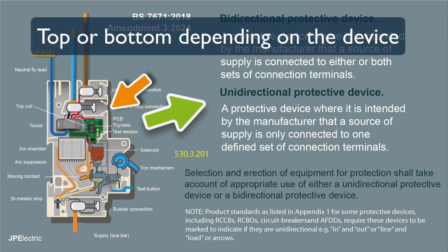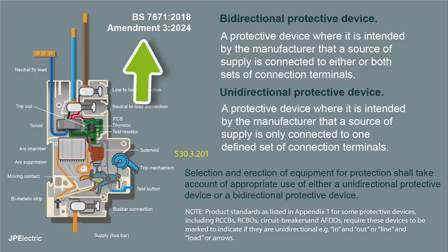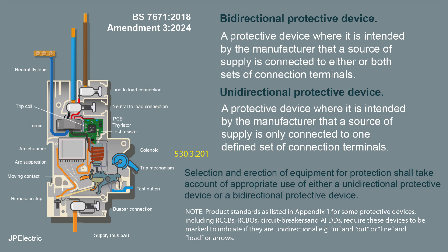This is in BS 7671, 2018 Amendment 3, 2024. There's been a bit of fuss about it. We have REG 530.3.201: selection and erection of equipment for protection shall take account of appropriate use of either unidirectional or bi-directional protective devices.